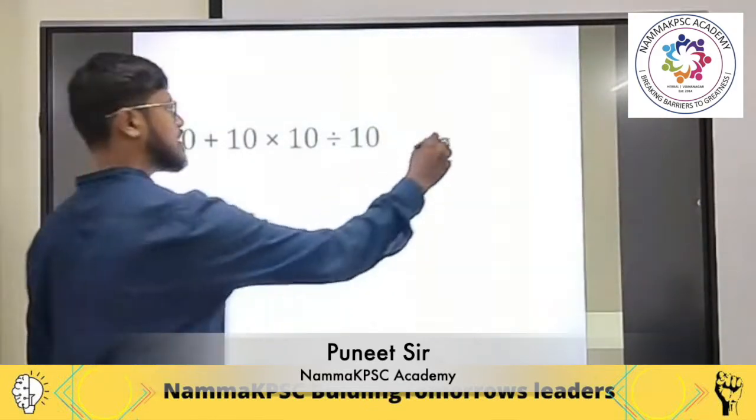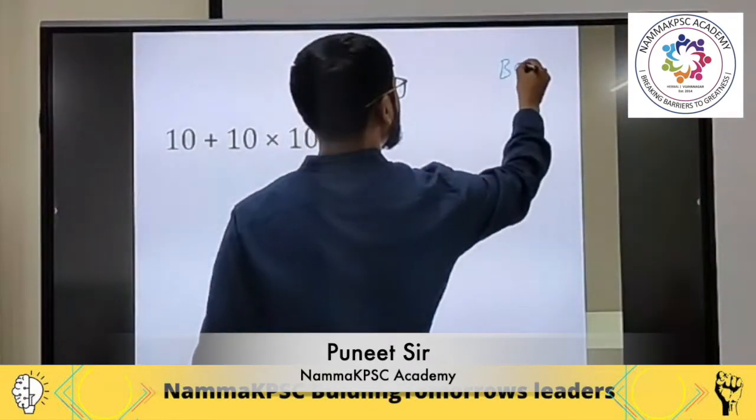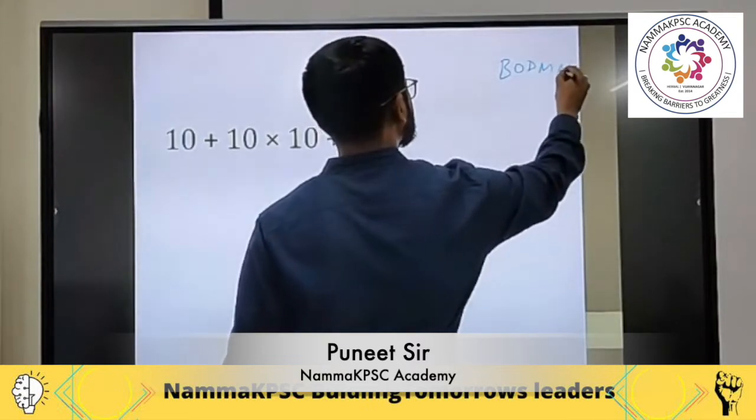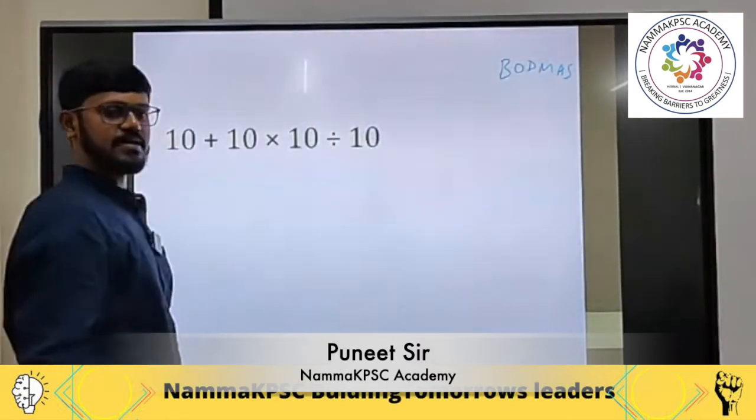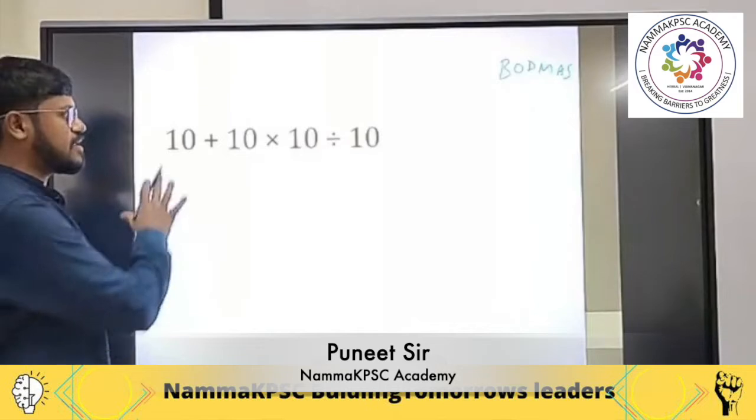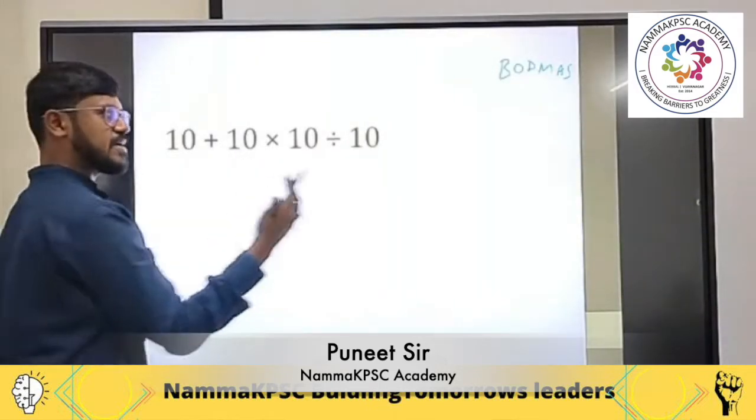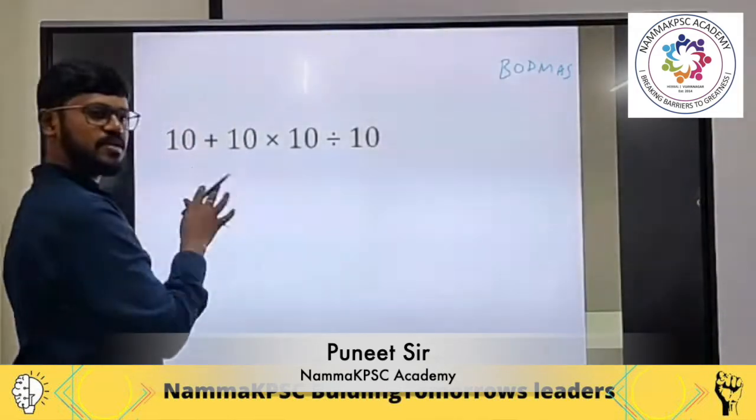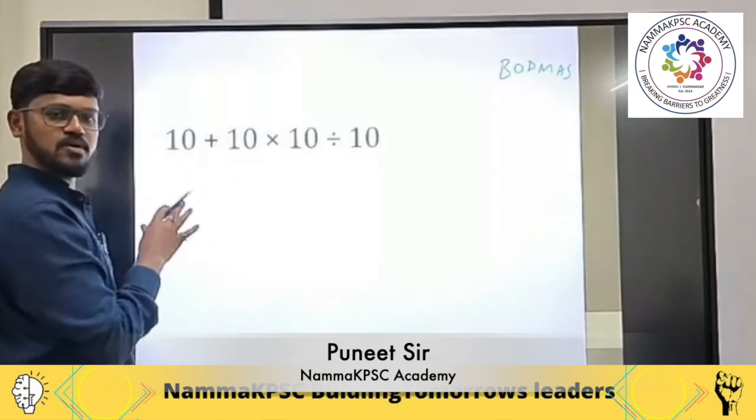What does this BODMAS rule tell us? In BODMAS rule, do we find the brackets? No, right? Nowhere any bracket is mentioned. Second, you look for your order. Any order is the square, square root, cube, cube root - it is not there.